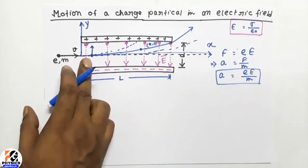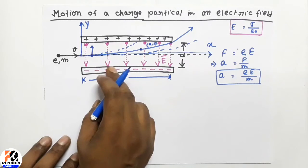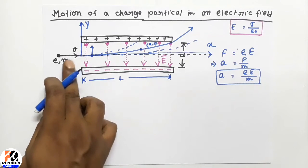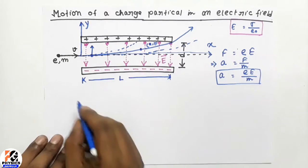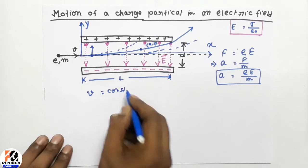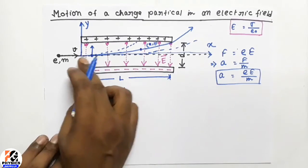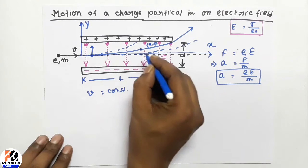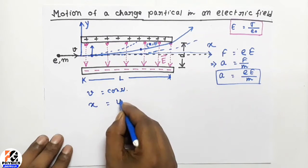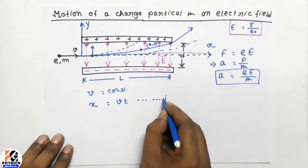The charge enters the electric field with horizontal velocity v. Since the electric field is vertically downward, it has nothing to do with the horizontal velocity. That means horizontal velocity v remains constant throughout the motion. So when the particle reaches a position with x coordinate equal to x, we have x equal to v times t. This is equation 1.